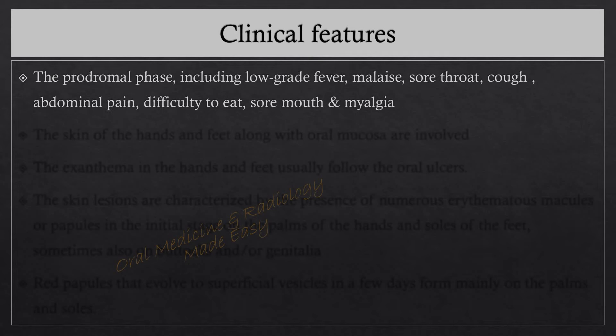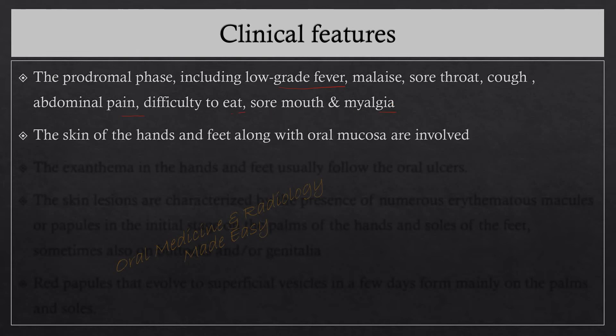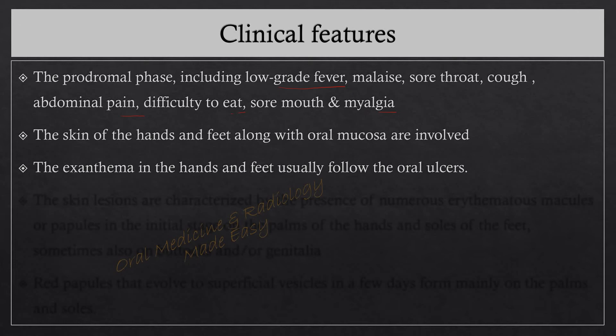As with other viral diseases, HFMD has a prodromal phase consisting of low-grade fever, malaise, sore throat, cough, abdominal pain, difficulty eating, sore mouth, and myalgia. Usually the skin of the hands and feet along with the oral mucosa are involved. The rashes on the hands and feet usually follow the oral ulcers, so the first lesions appear in the oral cavity and then on the hands and feet.